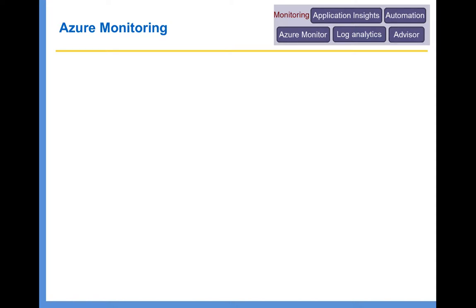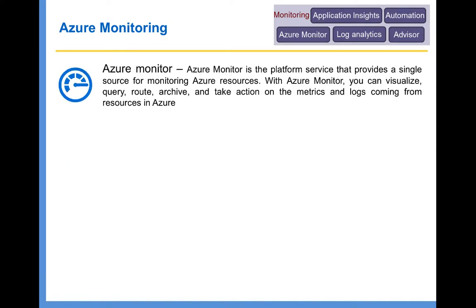The first basic tool for monitoring in Azure is Azure Monitor. Azure Monitor is a platform service that provides a single source for monitoring Azure resources. Using Azure Monitor, you can visualize, query, route, or archive, or take action on metrics and logs coming from resources in Azure. It is basically a centralized monitoring tool — you can see the metrics, activities, or diagnostics of all Azure resources in a single place. You can also configure it to archive all this data into a storage account or event hub for later reference. We have a hands-on exercise on Azure Monitor showing how to monitor Azure resources.